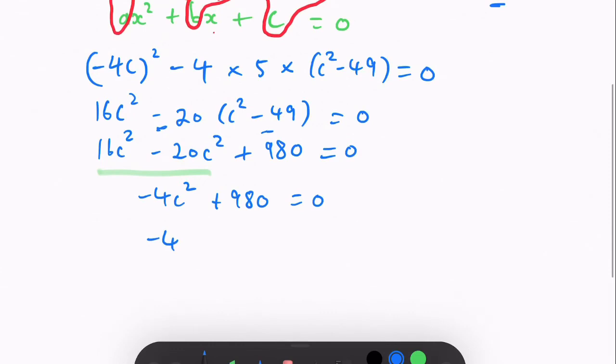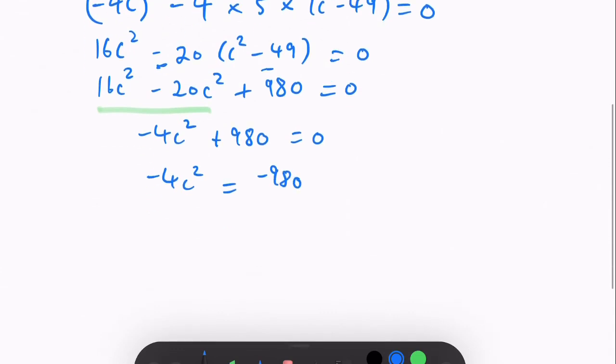and then minus 4c squared equals minus 980, and then c squared equals minus 980 divided by negative 4.